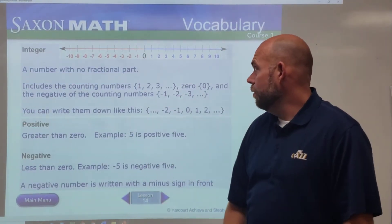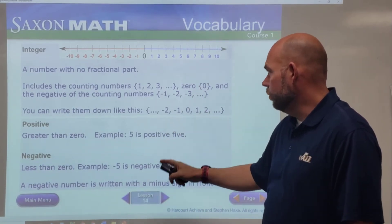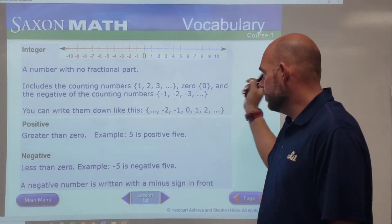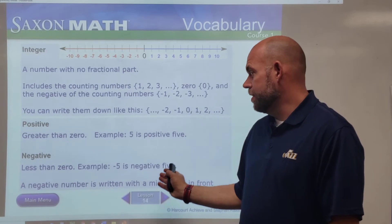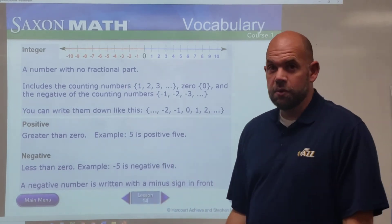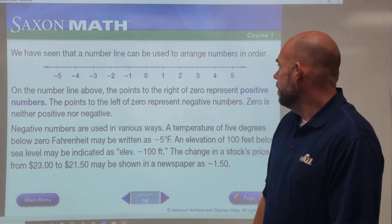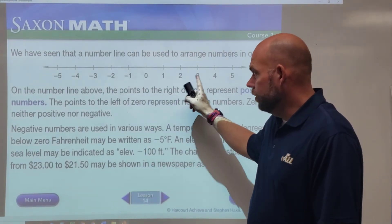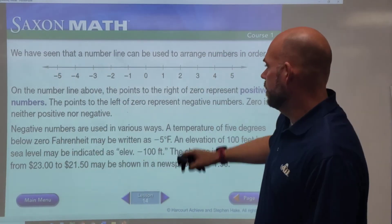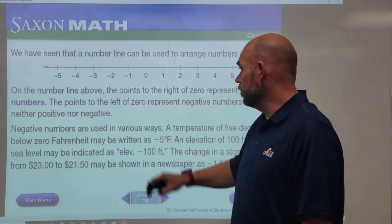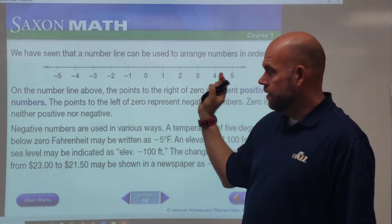First, let's review: a number with no fractional part is an integer — that includes counting numbers and whole numbers. We can write them as one, two, three, on up. Positive numbers are anything greater than zero; negative numbers are anything less than zero; zero is neither positive nor negative. On the number line we can arrange numbers in order, including negatives. Points to the right of zero are positive; points to the left are negative.